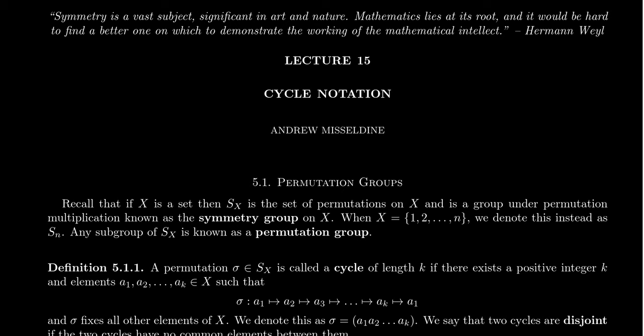And so the set of permutations can be closed under multiplication. The identity map is a permutation. The inverse of a permutation is a permutation. We see that the set of permutations forms a group which we call the symmetric group, denoted as S sub X.